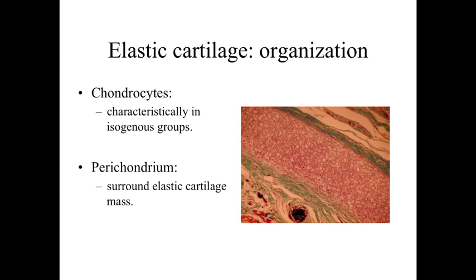In terms of organization, elastic cartilage looks like a cartilage matrix but has many more isogenous groups than hyaline cartilage. When viewed with an elastic fiber stain, you can see fiber structures within it. Lots of isogenous groups plus visible fiber structures indicate elastic cartilage. By contrast, hyaline cartilage has a smooth, glassy matrix appearance with a visible capsular and intercapsular matrix.